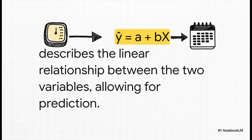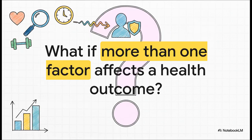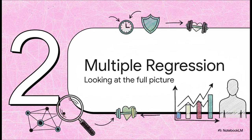A and B are just special numbers the analysis calculates from the data that tell us the exact relationship between the two. But health is way more complicated than that — something like blood pressure isn't just about age. What about diet, weight, or stress? If we only look at one clue at a time, we're going to get a really incomplete picture. So what do we do? This is where we need to upgrade our tools a bit.